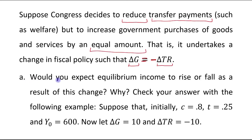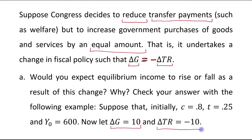First part: would you expect equilibrium income to rise or fall as a result of this change, and why? Check your answer with the following example. Suppose initially these values have been given to us, and let the change in government expenditure be 10 and change in transfer payments be minus 10.